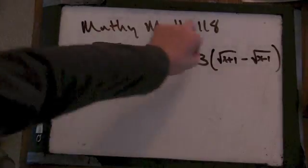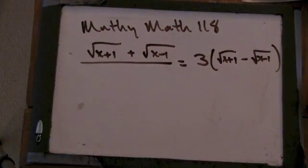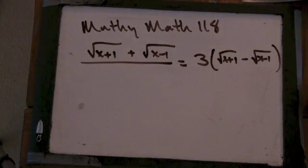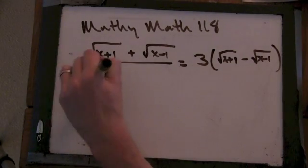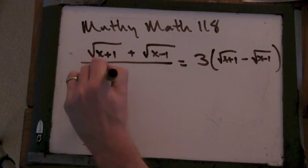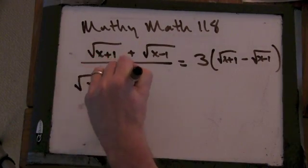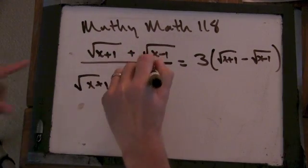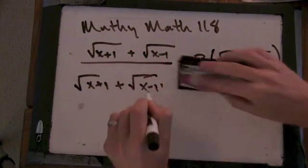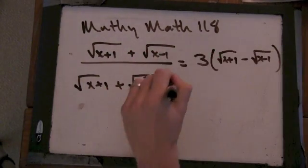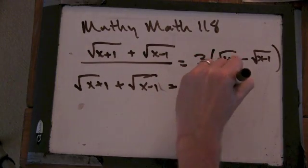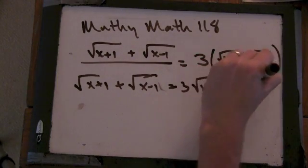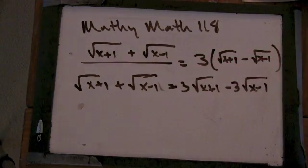Multiply this through. You get 3 times the square root of x plus 1 minus 3 times the square root of x minus 1. And the same thing on this side — you get 3 times the square root of x plus 1 minus 3 times the square root of x minus 1.